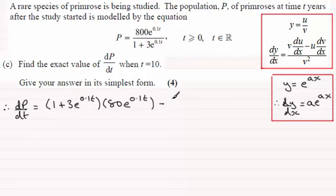Now it's minus the top of the fraction, 800 e to the power 0.1t, multiplied by the differential of the bottom of the fraction. Differentiate 1, that goes to 0. Differentiate this, we get 3 times 0.1, so that's going to be 0.3, and then it'll be e to the power 0.1t.